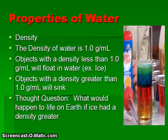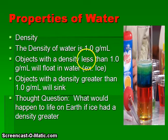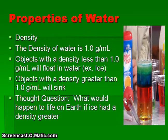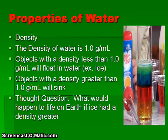Another important property of water is its density, which is 1 gram per milliliter — also called 1 gram per cubic centimeter or cc. Objects with a density less than 1 gram per milliliter will float in water; ice is an example of this. Objects with a density greater than 1 gram per milliliter will sink. A thought question: what would happen to life on Earth if ice had a density greater than liquid water?